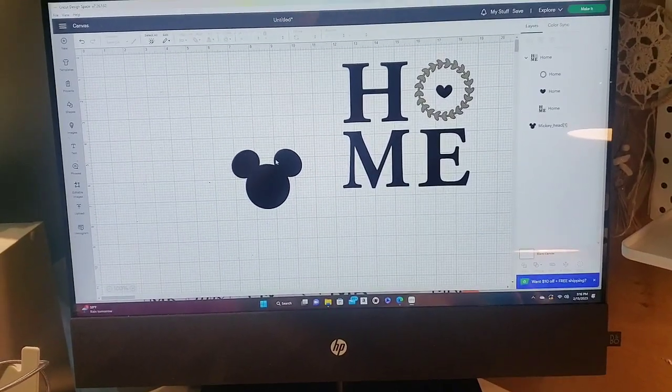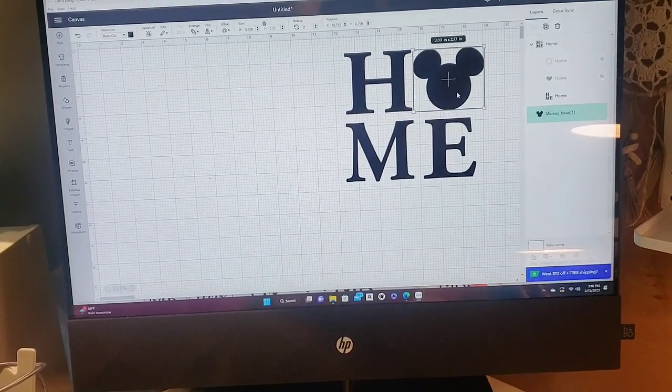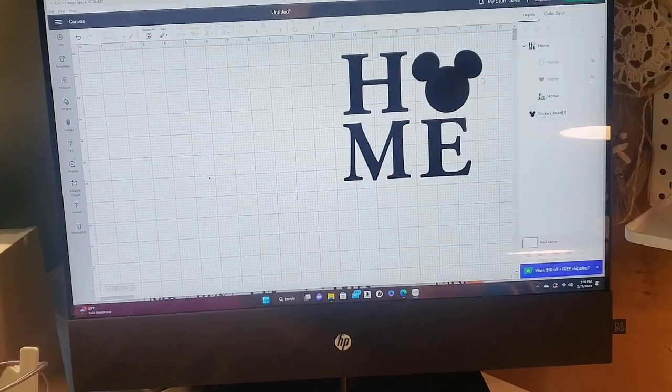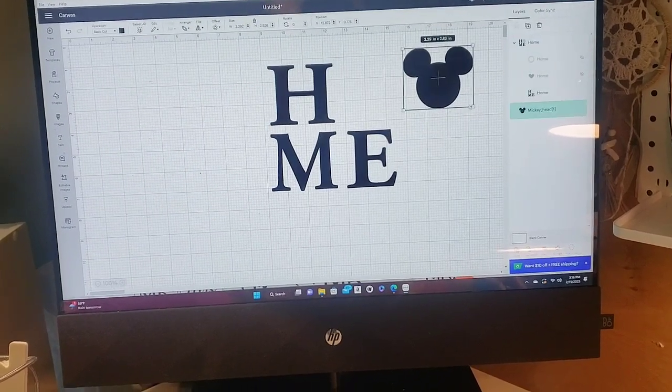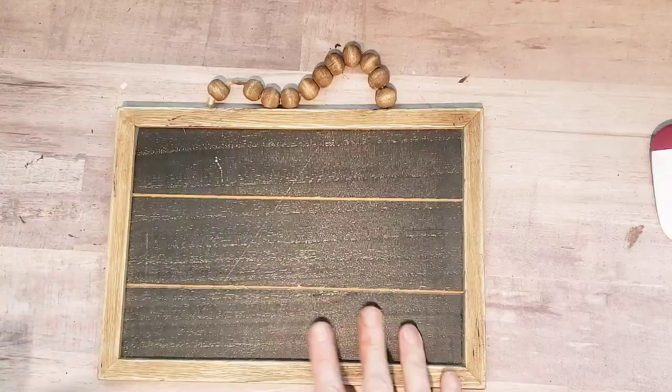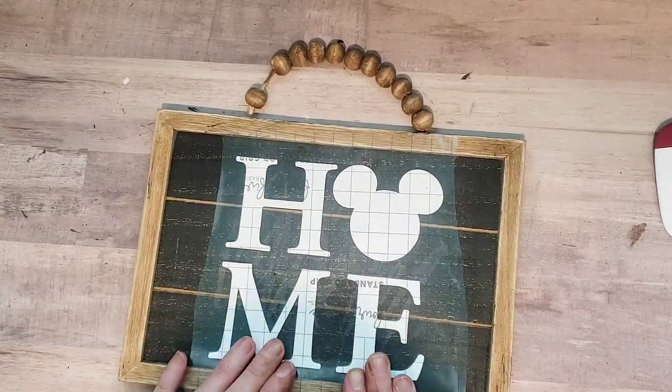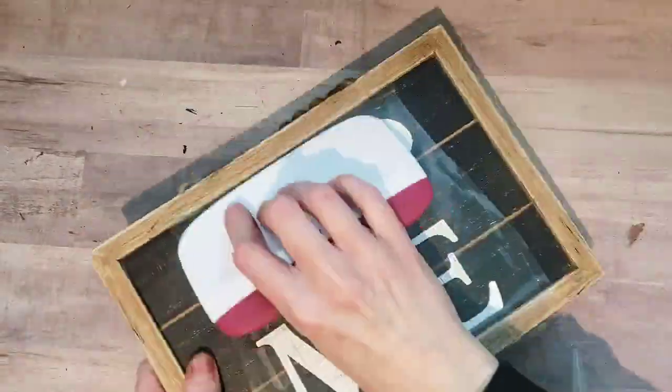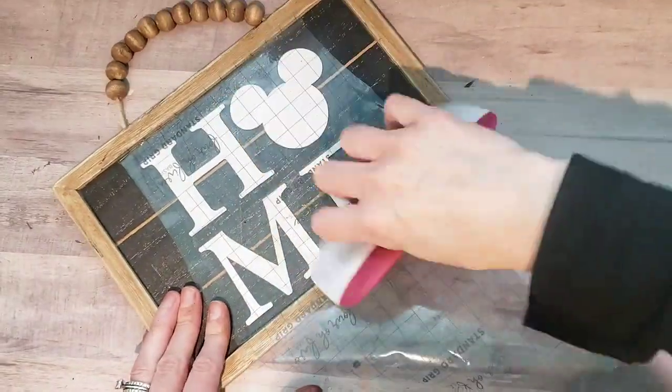Okay, for the last DIY, I wanted to make a simple home sign for my cousin. I went into my Cricut design space and found this home image. I just replaced the O with a Mickey head and sized it. I took this sign from Dollar Tree, took my Waverly Wax, and waxed the beads and the outside of that frame. Then I'm putting my image right on there. This came out so cute as is.